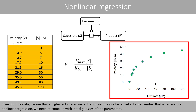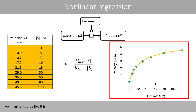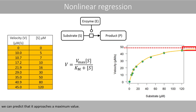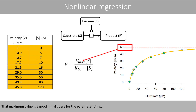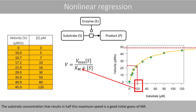If we plot the data, we see that a higher substrate concentration results in a faster velocity. Remember that when we use nonlinear regression, we need to come up with initial guesses of the parameters. If we imagine a curve like this, we can predict that it approaches a maximum value. That maximum value is a good initial guess for the parameter Vmax. The substrate concentration that results in half this maximum speed is a good initial guess of Km.